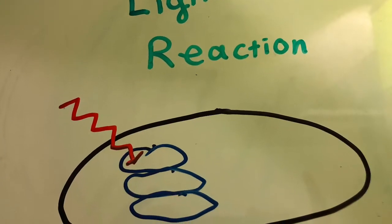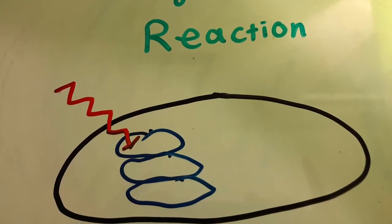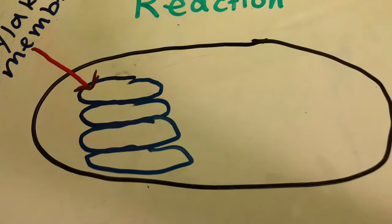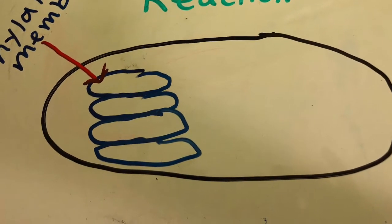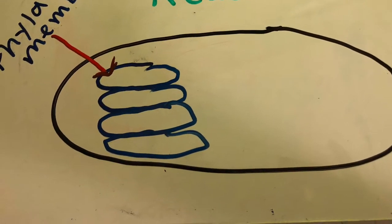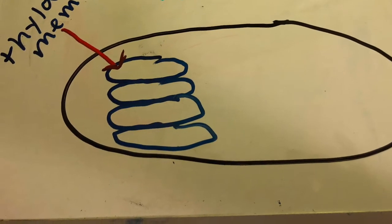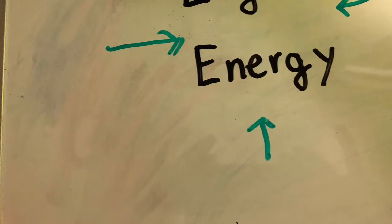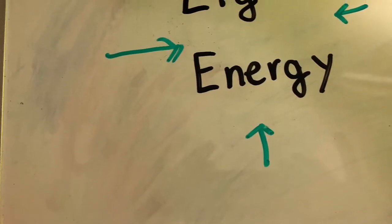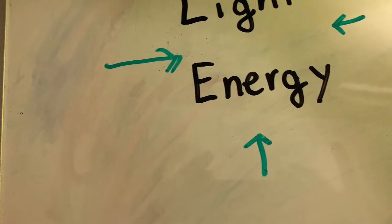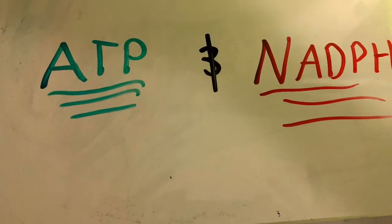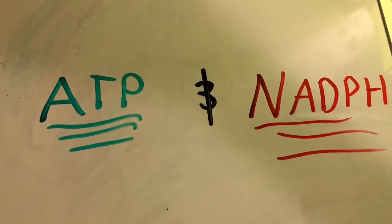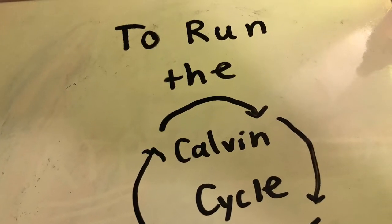The light reaction process mostly occurs in the thylakoid membrane. The main purpose of the light reaction process is to intake light energy from the sun to create organic molecules like ATP and NADPH, which is needed to help run the Calvin cycle.